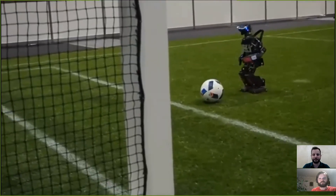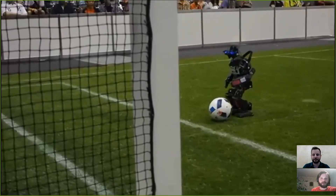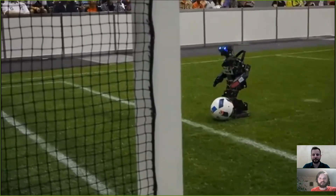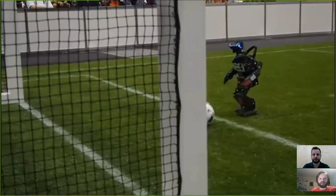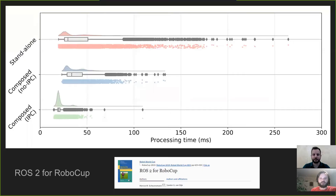In 2019, as the first RoboCup team, we decided to use ROS2 because it's tailored for our platform needs. This slide shows a benchmark for image processing from our last paper. A major drive for moving to ROS2 was native support of composing nodes, but also the possibility to use intra-process communication, reducing the processing time significantly.